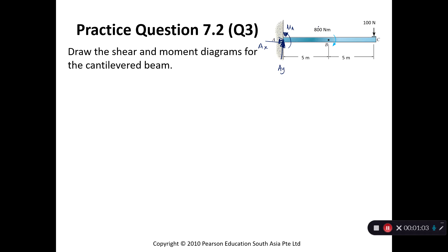So what else do we have on this diagram? There's this moment of 800 newton meters and a force at the end of the beam of magnitude 100 newtons. First we determine the support reaction. AX equals 0 because there are no other forces in the X direction, and AY is the only unknown vertical force. So the summation of forces in the Y direction equals 0, giving us AY equals 100 newtons.